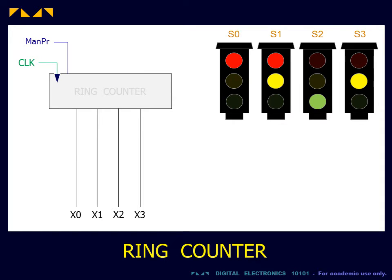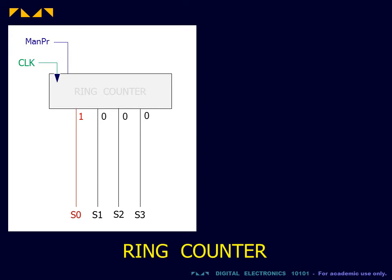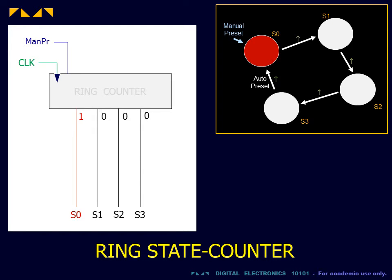In the previous video, we used a ring counter to produce a repeating sequence. The ring counter cycled an active signal through its output lines. The cycling of this active line was used to activate the states of a repeating process.